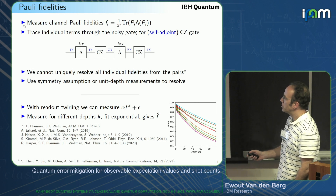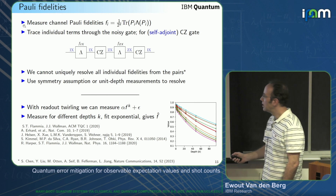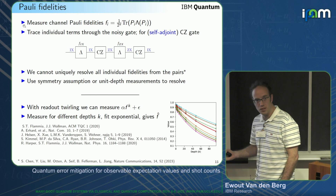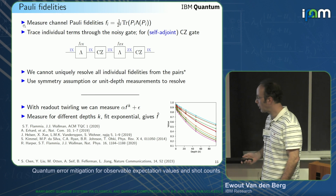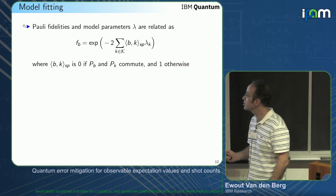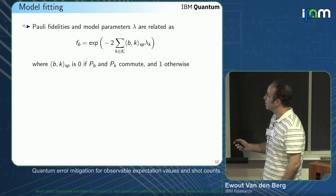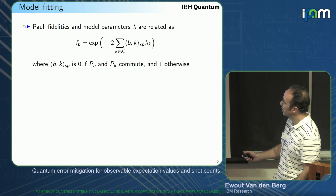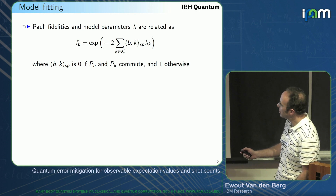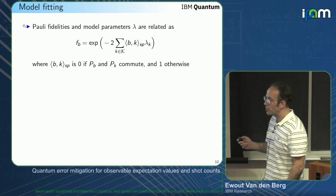If you apply readout twirling, you can measure elements of the form α · f^k, where f is the product of two fidelities and α is a term measuring state preparation and measurement error. Here is an example: you repeatedly apply your gate, you get exponentially decaying curves, you fit the curves and get your estimated fidelity f̂. So now we have estimations of this — what do we do with them?